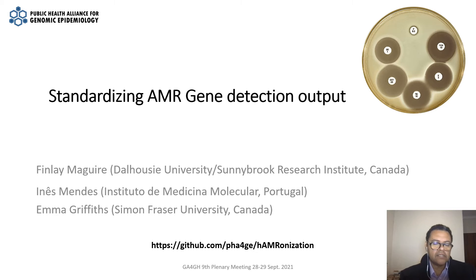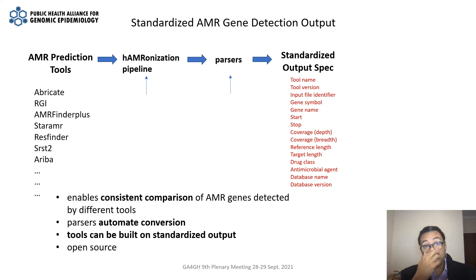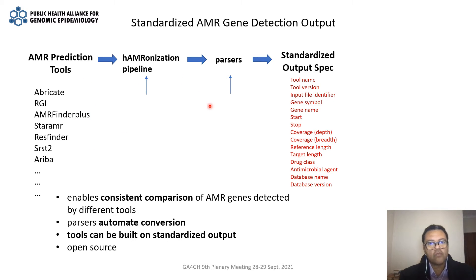A second project within the Data Structures Working Group is really looking at standardizing antimicrobial resistance gene detection output. This work is driven by Finlay, Ines and Emma. Currently there are a range of AMR prediction tools, and each of them will have their particular outputs. What the PHAGE harmonization pipeline is intended to do is to standardize the outputs of each of these tools so that one could have a specification at the end, which one could more easily relate one output to another. This then becomes part of the toolkit we are making available to researchers as well as implementation scientists.